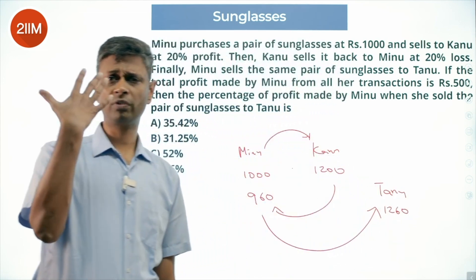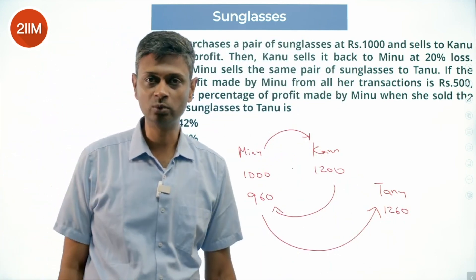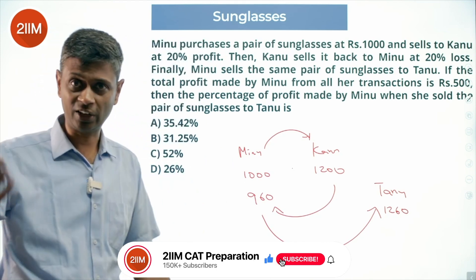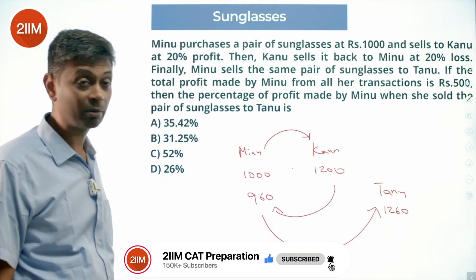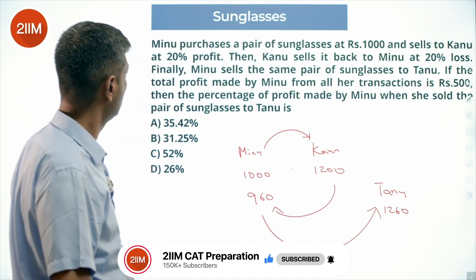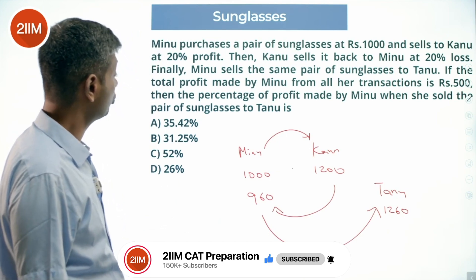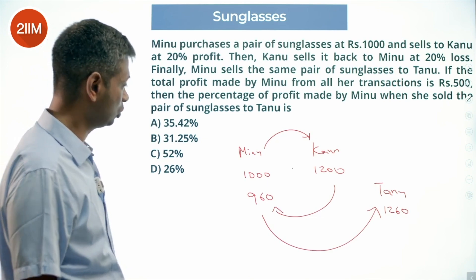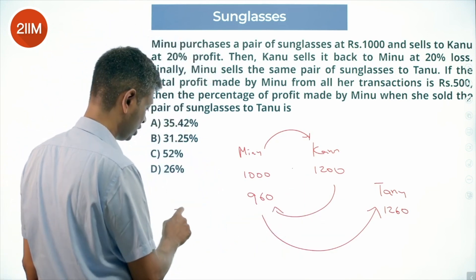That's ₹1260. She makes a total profit of ₹500 — already made ₹200 from Kanu, got back the sunglasses, and then makes another ₹300 selling to Tanu. Now the percentage of profit made by Minu when she sold the pair of sunglasses to Tanu: from ₹960 to ₹1260, that's 300 divided by 960 into 100.